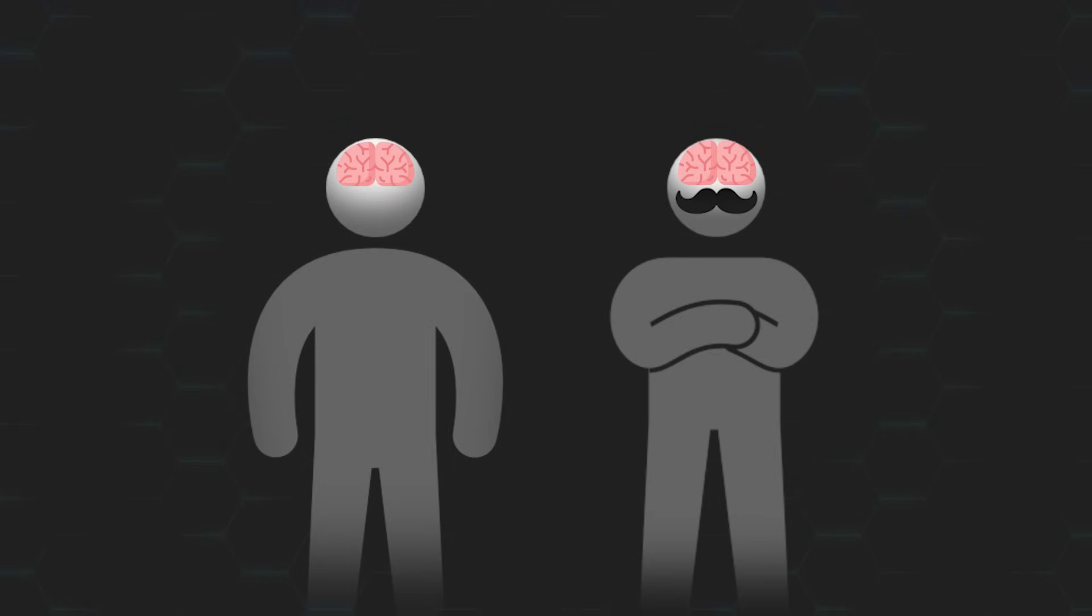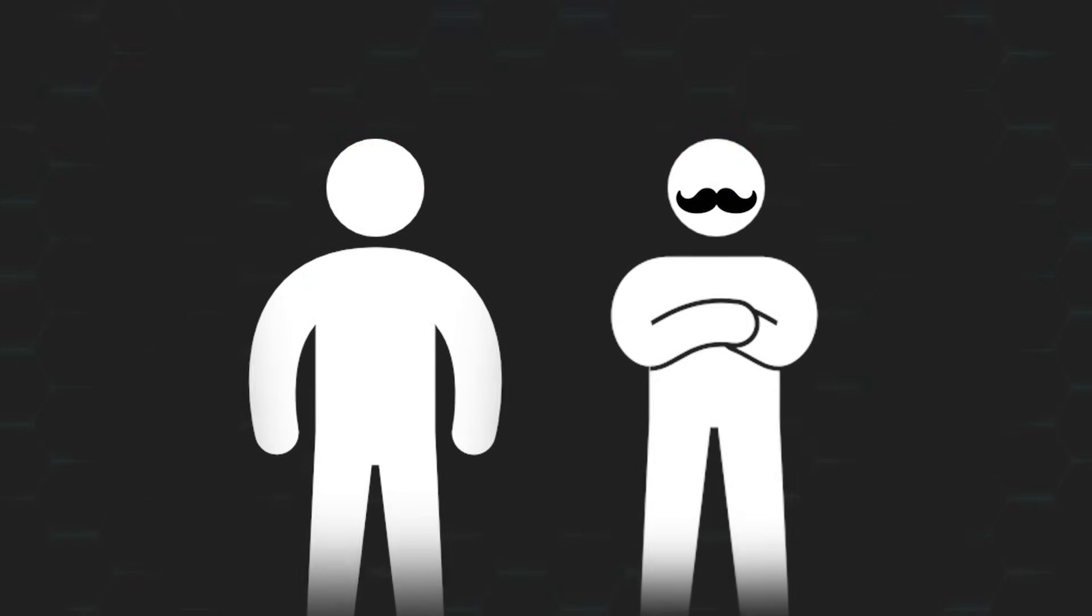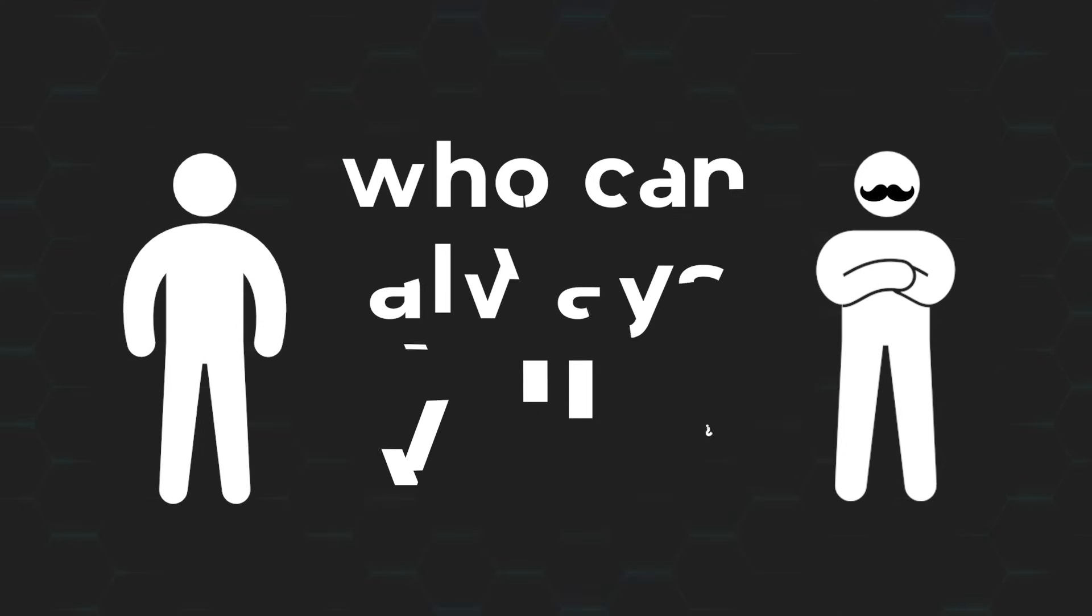Now, if we assume that both of us play optimally, that is, we're both geniuses and will always play the best possible move on each of our turns, then which one of us has the upper hand and, as a result, can always win the game?